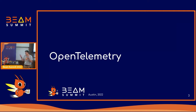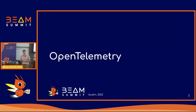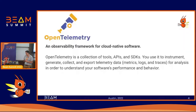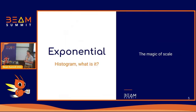OpenTelemetry, for those who were not on my talk yesterday, is an SDK, an API, a model — basically everything for telemetry data: metrics, traces, and logs. This talk focuses on one specific metric type, and that's an exponential histogram.